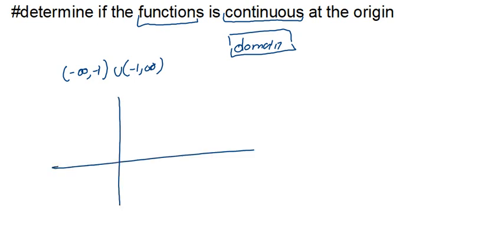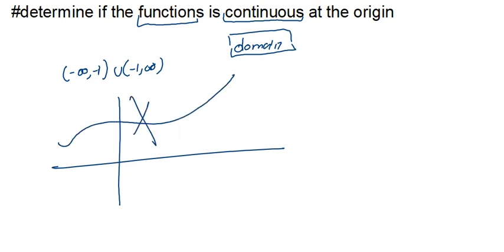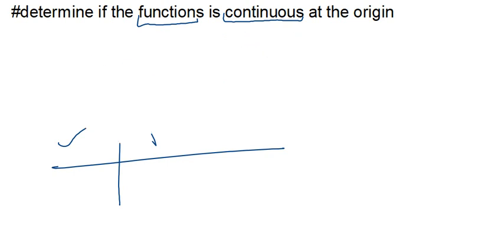If you then draw the function — even when you know you're supposed to have an asymptote there — and draw it as if it passes through, that doesn't really make sense, because you've said negative one is not part of the domain. If you include it in the graph, it doesn't really make sense. We have to show that this part is not supposed to be part of the domain.